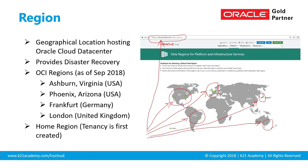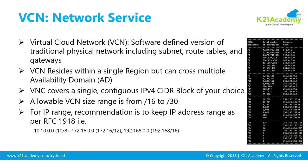Your Oracle cloud account can be in multiple regions — for example, one in EMEA (London) and one in the US. However, the virtual cloud network is within a single region. If you have two regions, you'll create at least two virtual cloud networks. A VCN in one region can talk to a VCN in another region using something called remote VCN pairing, which I'll explain later.